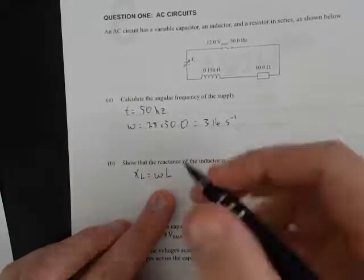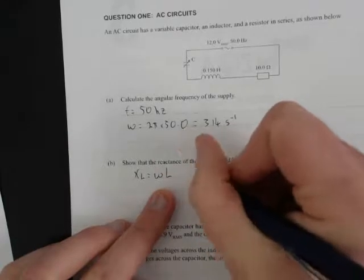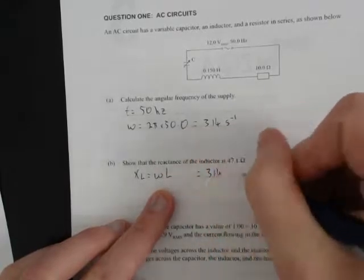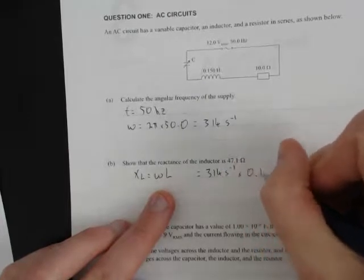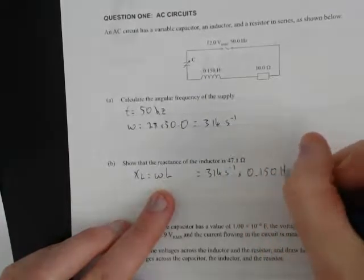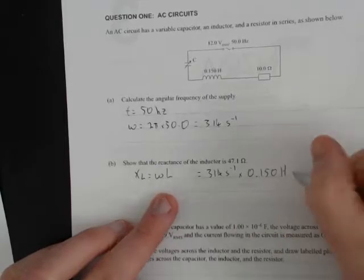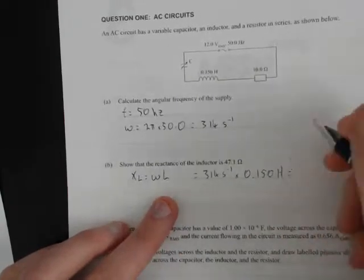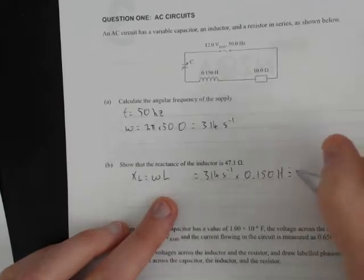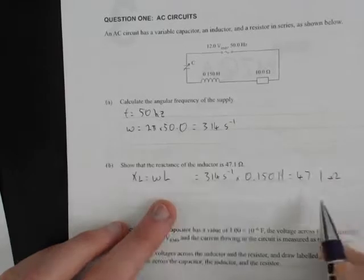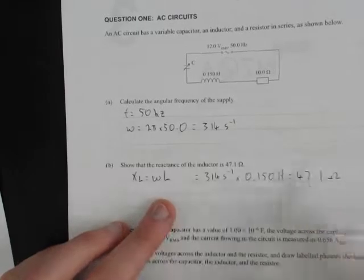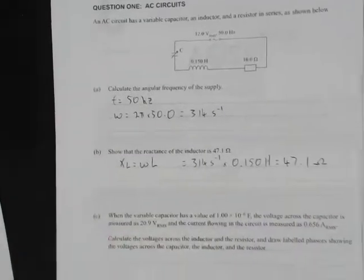ω is 314 seconds⁻¹ times 0.150 Henrys—notice 3SF for all the numbers—equals 47.1 ohms. Look at that, it works out, keeping with the three significant figures.